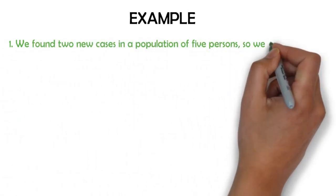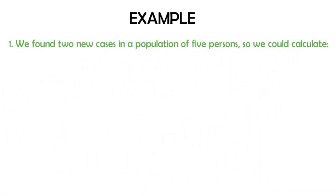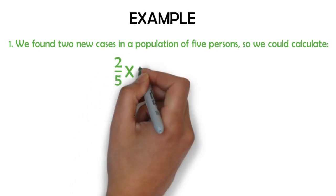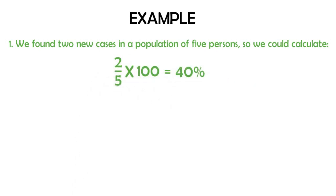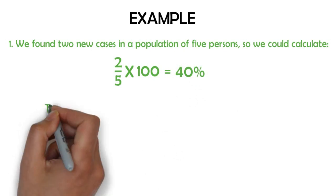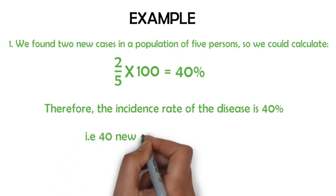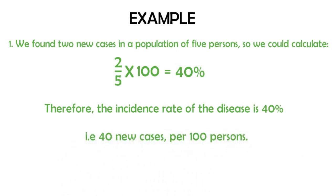In example one, we found two new cases in a population of five persons. So we could say that the incidence was 2 divided by 5 multiplied by 100, which equals 40%. The report will read that the incidence rate of that disease in the population is 40%, that is, 40 new cases per 100 persons.